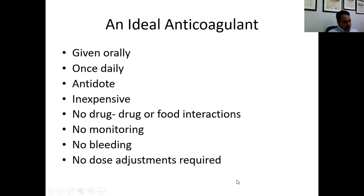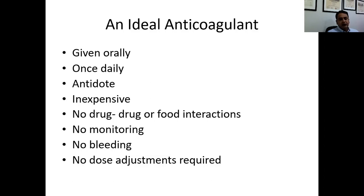When we talk about an ideal anticoagulant, what are we looking for? If it can be given orally, that's a big thing — as we know about Lovenox, it's a hassle to give it twice a day in injection form. Ideally, an oral anticoagulant should be given orally, with an easily manageable dose, should have an antidote, be inexpensive, have no drug-drug or food interactions, require no monitoring, and have minimal or no risk of bleeding.